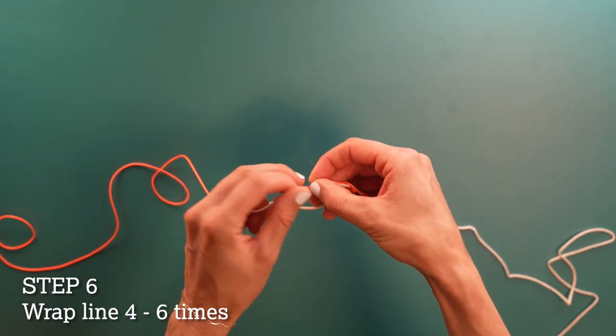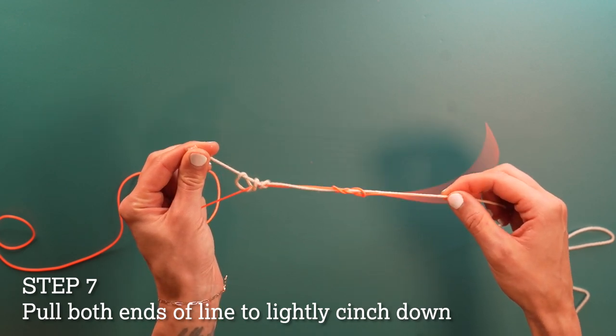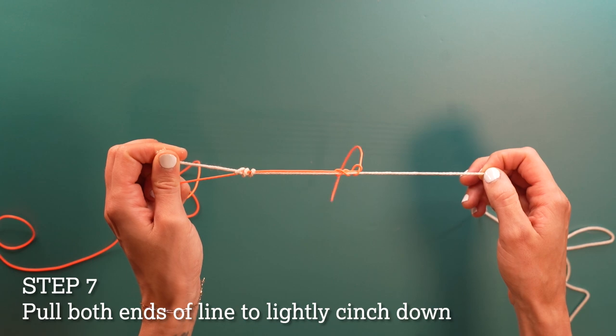Wrap the line around four to six times. Holding both ends of the line, lightly pull to cinch down but don't tighten all the way just yet.